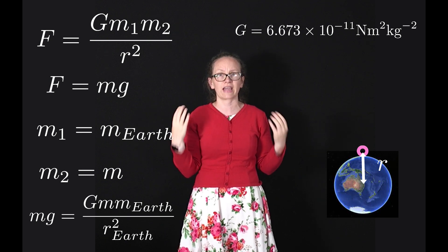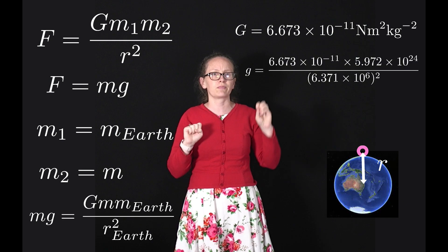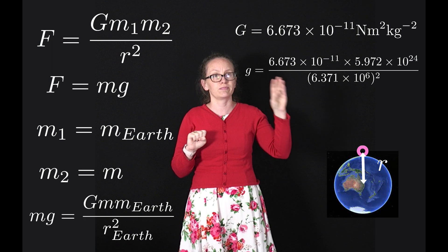We can use this to calculate what little g should be. So little g should equal big G, which is 6.673 times 10 to the minus 11 Newton meters squared per kilogram squared,